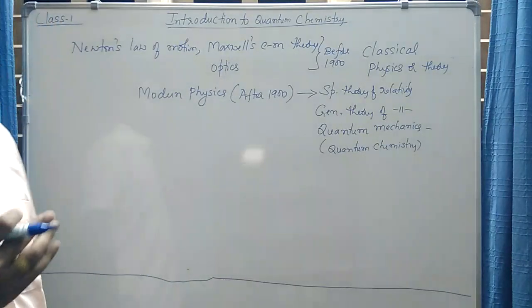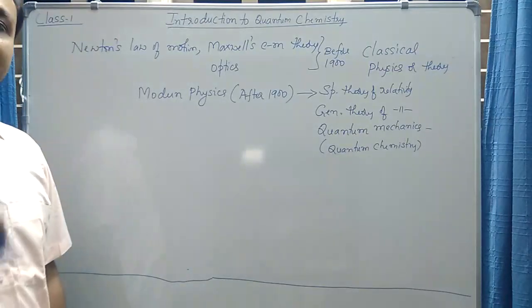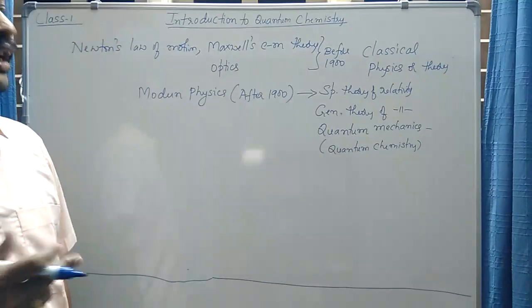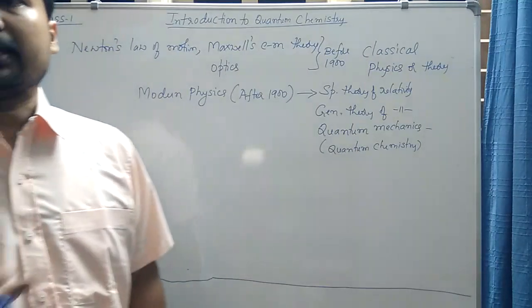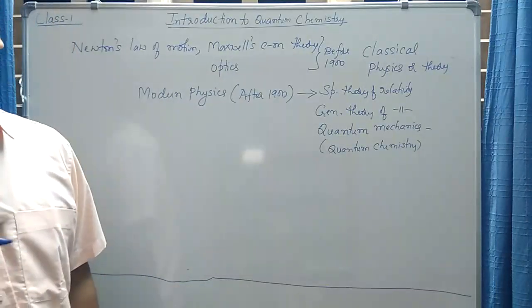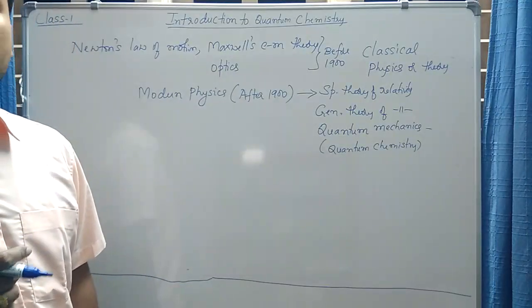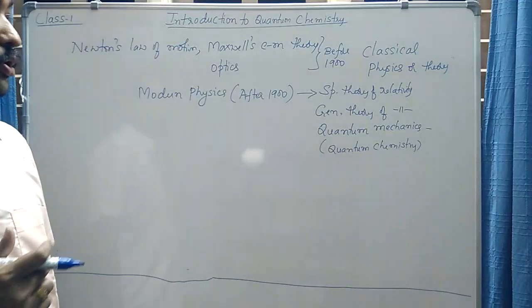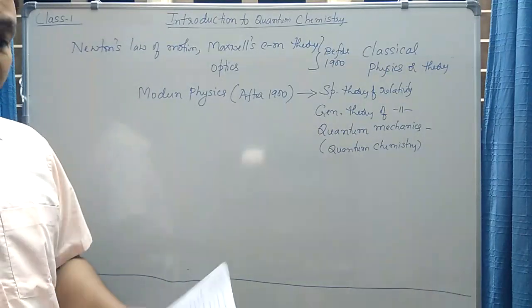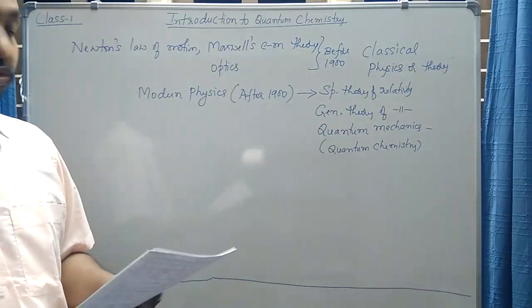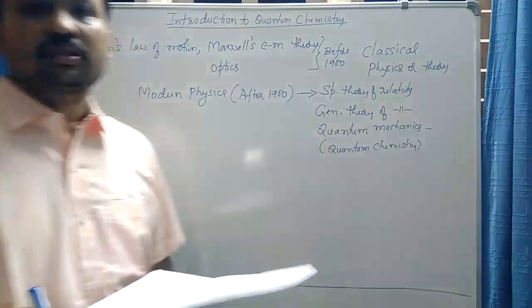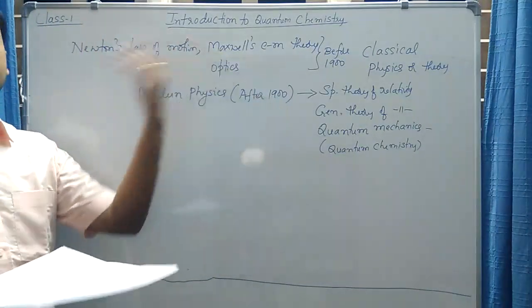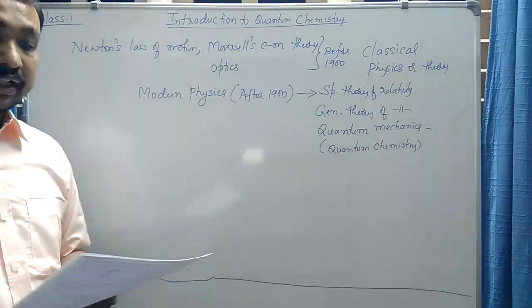It was because of the contribution of several scientists — to name a few: Schrödinger, Heisenberg, Dirac, Pauli, and Born. Even Einstein contributed to the development of quantum mechanics. This is a very new theory that was required, formulated after 1900.